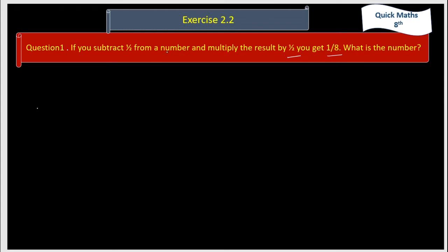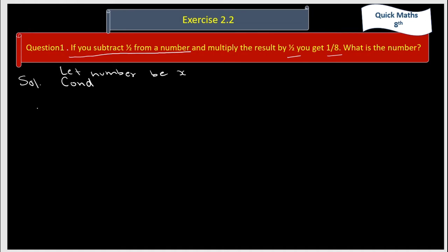So, there are 3 conditions. First condition: if you subtract 1 by 2 from a number — first let the number be x. So, condition first is x minus 1 by 2.